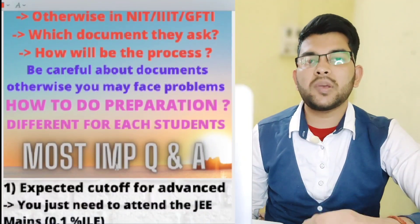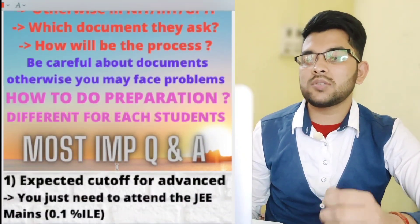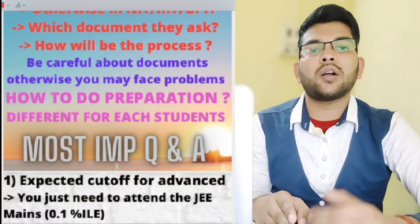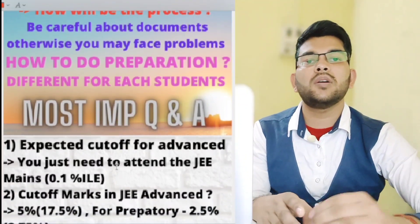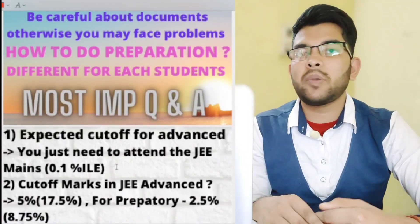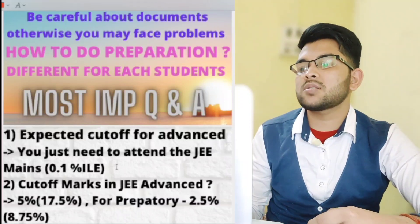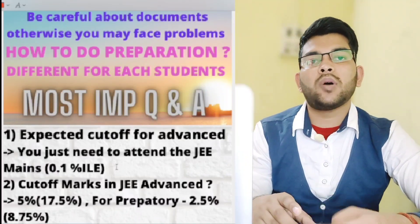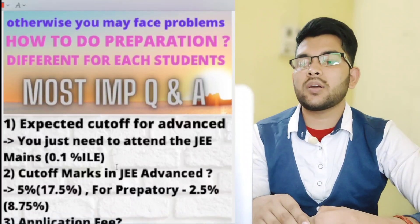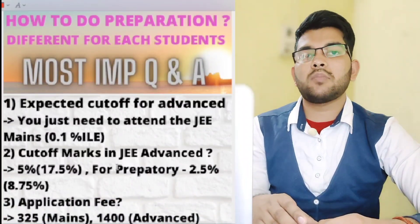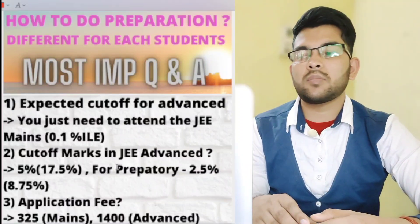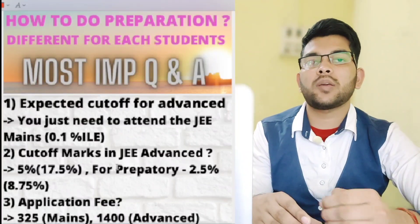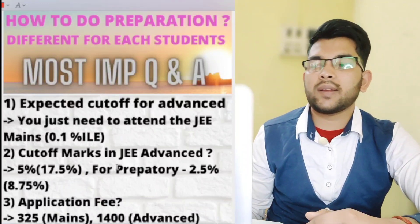Here are important Q&A for PWD candidates in JEE. First, the expected cutoff for JEE Advanced: you just need to attempt the JEE Mains examination and you will likely qualify for JEE Advanced — the cutoff is around 0.1 percentile, meaning simply sitting in the exam will qualify you — but this does not guarantee college admission. For JEE Advanced, to be in the rank list, for general courses you need 5 percent marks per subject and 17.5 percent aggregate; for preparatory courses, it is 2.5 percent per subject and 8.75 percent aggregate.